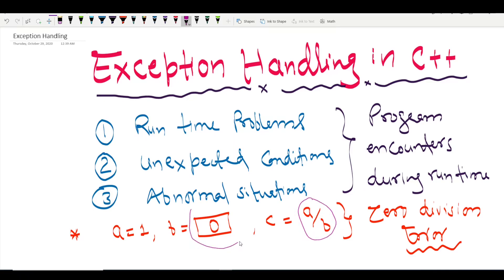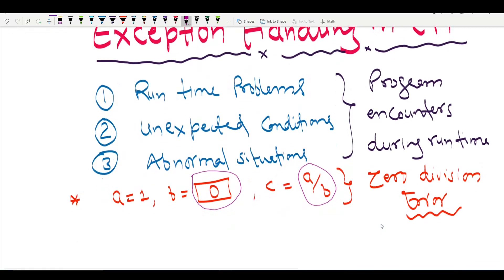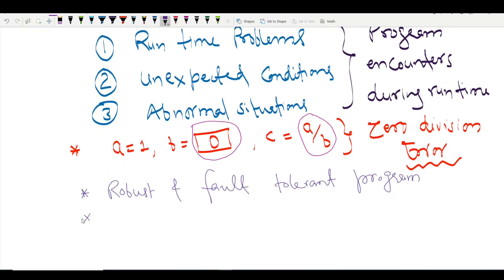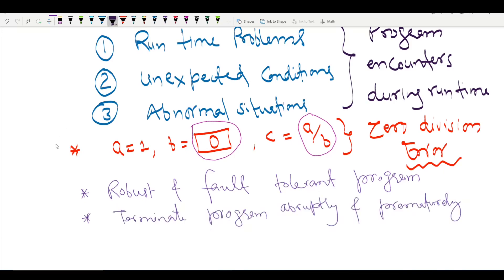If the user does not enter 0, the situation will be perfectly fine. But as soon as the user enters 0, the statement A divided by B will throw an exception — a divide by zero exception. We need to handle this kind of situation so we can create a robust and fault-tolerant program. If we don't handle these situations, the program will terminate abruptly and prematurely.